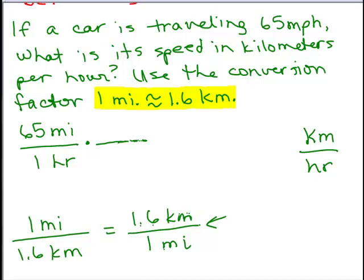Remember, these fractions equal 1 because the numerator and denominator represent really the same thing. So we've got 1.6 kilometers and in the denominator, we've got 1 mile.